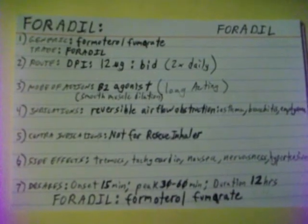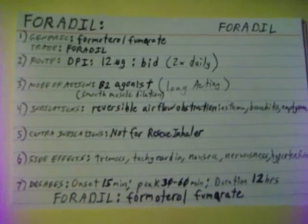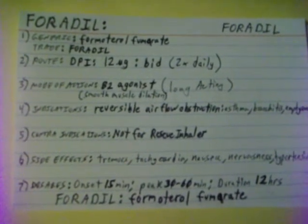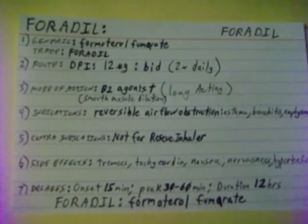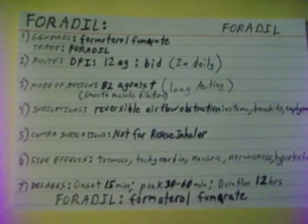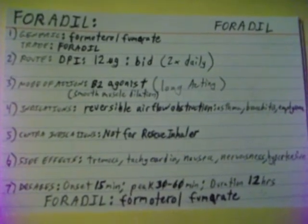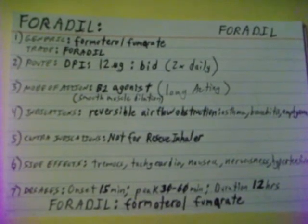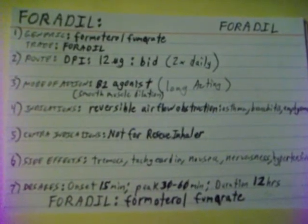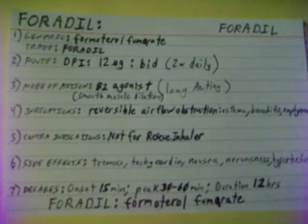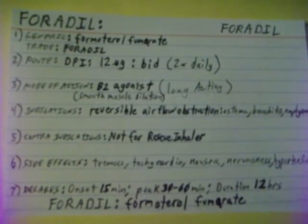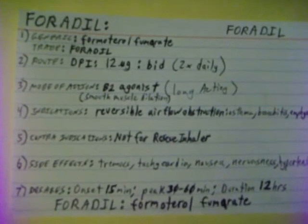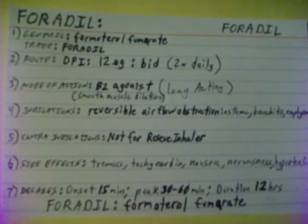Foradil, generic name Formoterol fumarate, trade name Foradil. Foradil is given by a dry powder inhaler at 12mcg BID, which is twice daily. The mode of action of Foradil is a B2 agonist, which causes smooth muscle dilation in the breathing muscles.